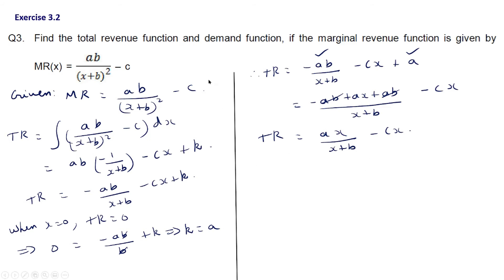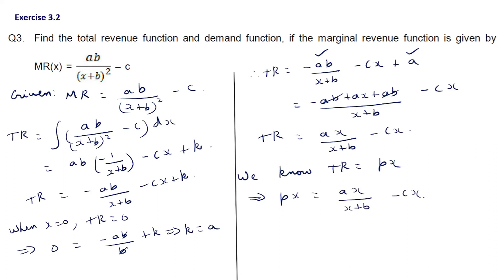The demand function is found using total revenue = p × x. From TR = ax/(x+b) - cx, dividing by x gives p = a/(x+b) - c. This is the total revenue function and the demand function.